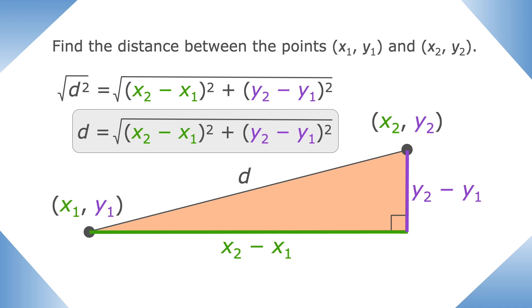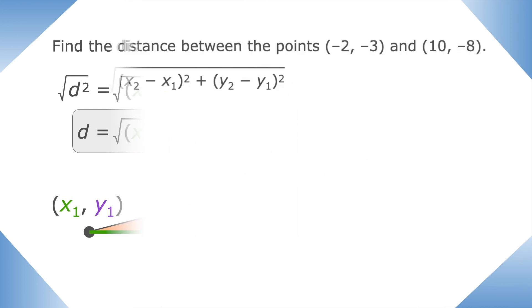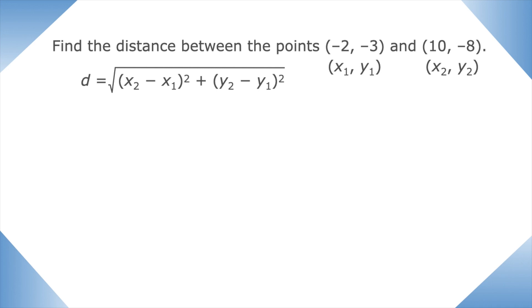Let's try it out with some more examples. Find the distance between the points (-2, -3) and (10, -8). I have the formula ready to go. The first ordered pair will be our x1, y1 values, and the second ordered pair will be our x2, y2 values. Let's color coordinate. Let's make the x values green and the y values purple.